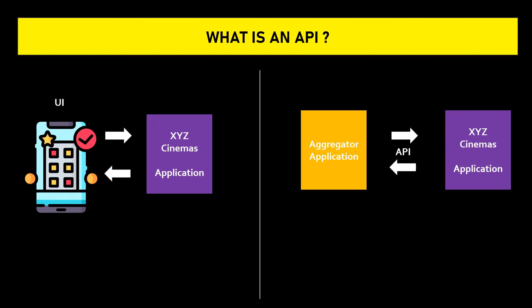API is an acronym for Application Programming Interface. Let us take a simple example to understand what an API is. You are planning to watch a movie next week and you prefer XYZ Cinemas. You log on to XYZ's website for online booking of tickets. You select the date and the movie using the website's user interface, or UI. Once you have entered the required details, you click submit and the show timings matching your search criteria are displayed on the screen.